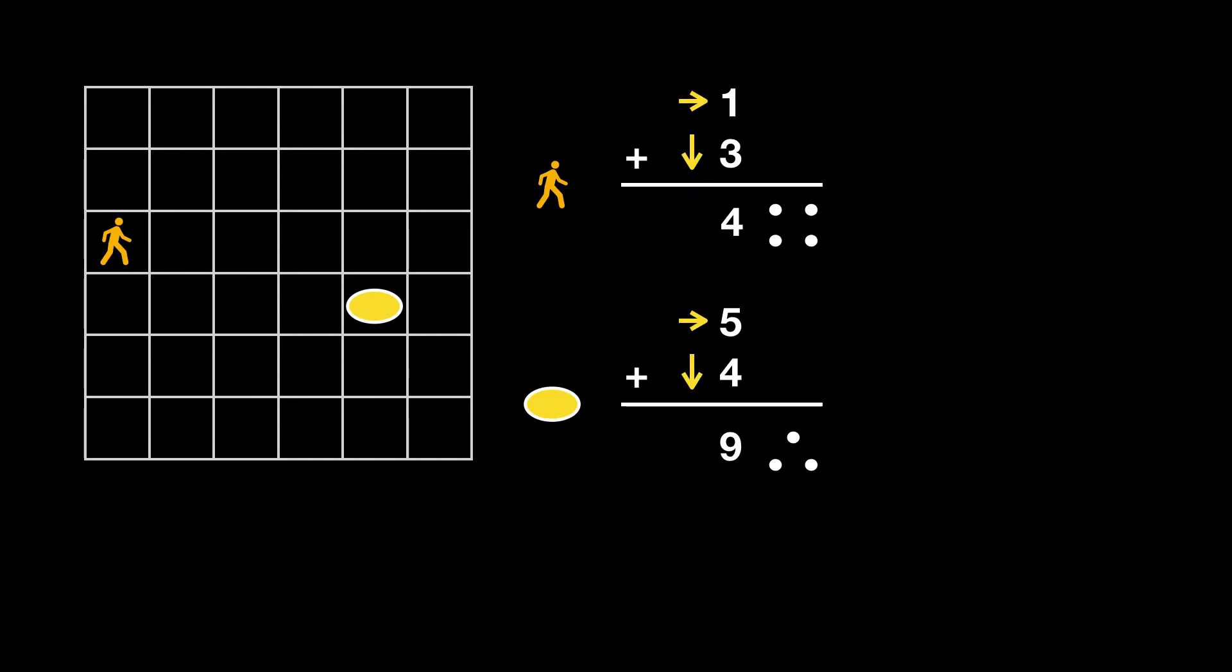When the sum of the coordinates of the exit is odd, and the sum of the person's coordinates is even, no matter where the person walks to, it will always be even, cannot become an odd number. Therefore, the person can never reach the exit.